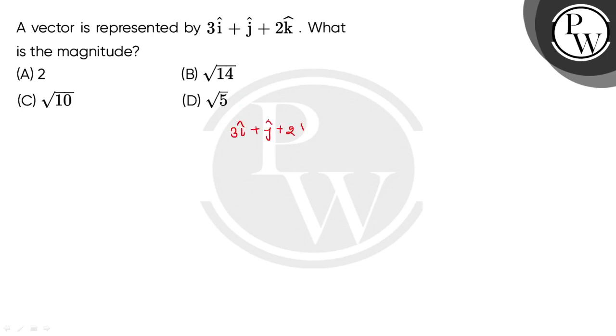How can we find this magnitude? If we know that a general vector is ai cap plus bj cap plus ck cap, what is the magnitude of this? The magnitude is the square root of a square plus b square plus c square.